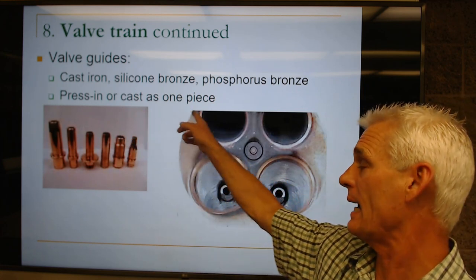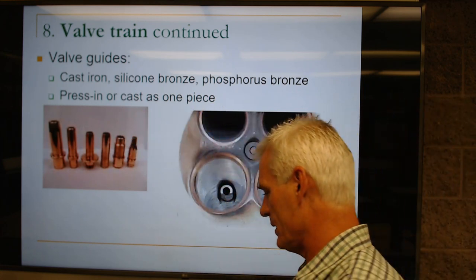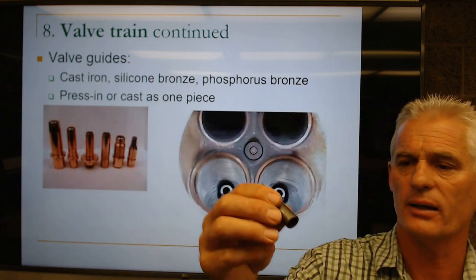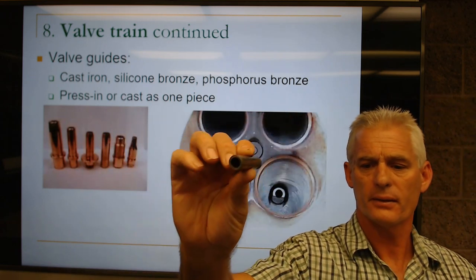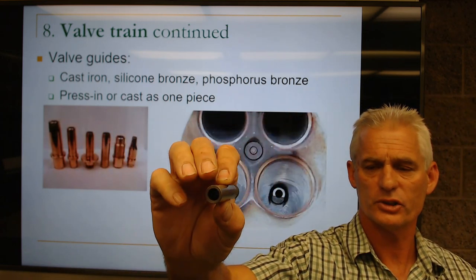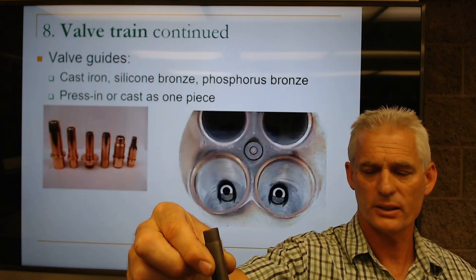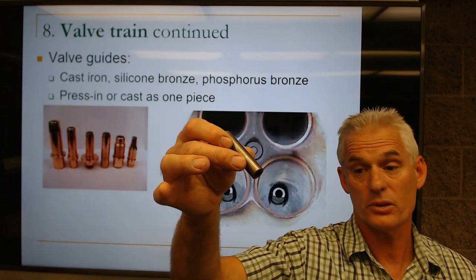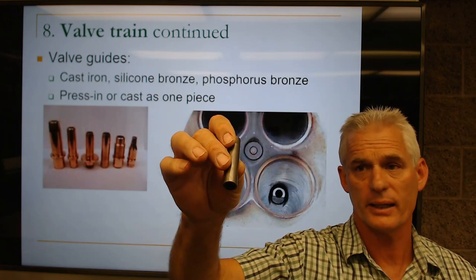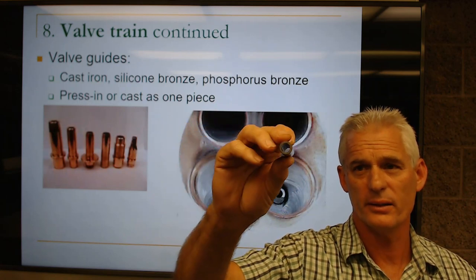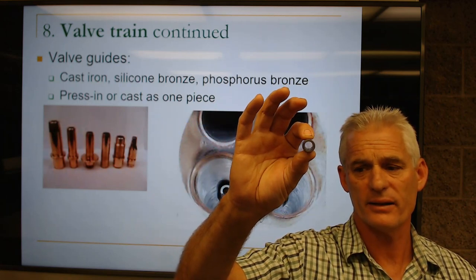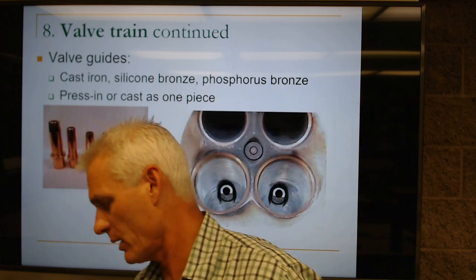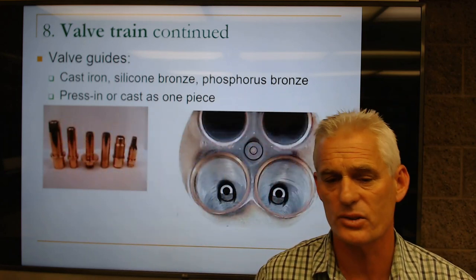Guides can be either pressed in or cast as one piece. Here's a cast iron pressed-in valve guide that gets pushed into a cylinder head — aluminum or cast iron — to guide the valve stem so the valve sits on the seat, seals compression, and gets cooled.